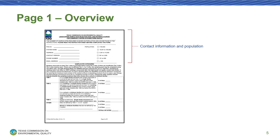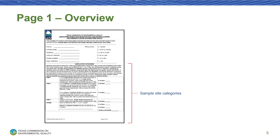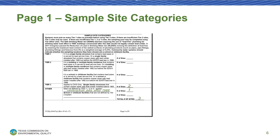Page 1 of the form contains two sections. In the top section, you'll input the contact information for your system and the current population. For the contact information, it's best to choose an individual who can make corrections to the form so that the lead and copper team can reach out if any revisions are needed. In the bottom section, titled Sample Site Categories, you'll specify how many sites of each tier you're adding. For example, if you're adding two tier 3 sites and one tier other site, then you would write a 2 and a 1 in the rightmost columns as shown.